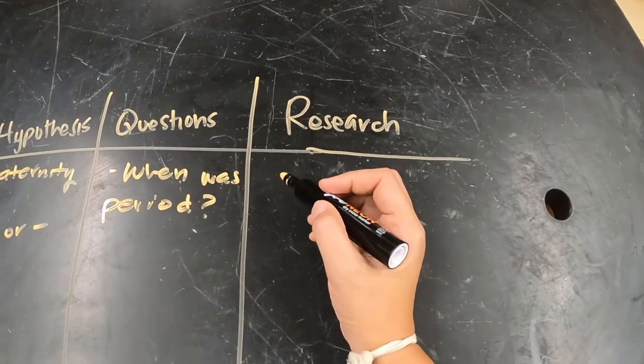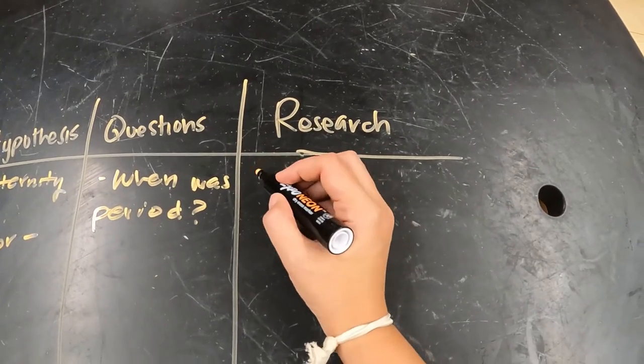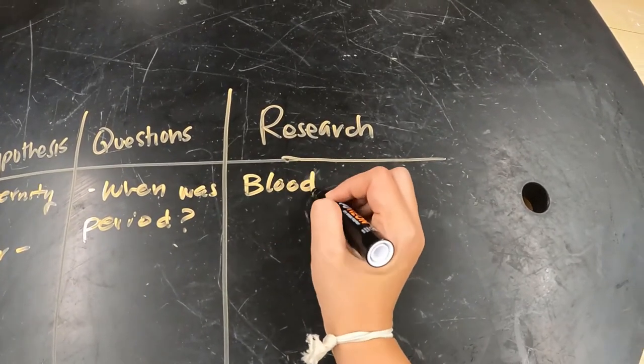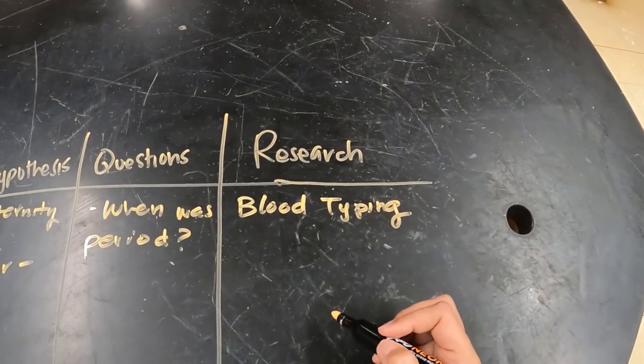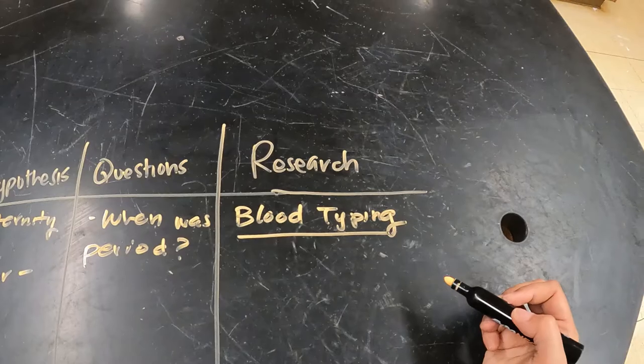And then they might also research terms. So if you haven't done a lecture on blood typing, then that would be another way for them to find out the information on their own by putting it down as something they need to do additional research before they can analyze the data appropriately.